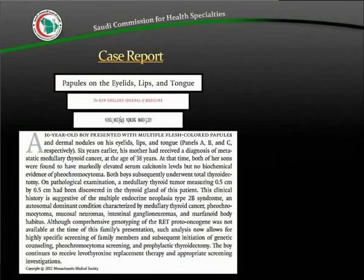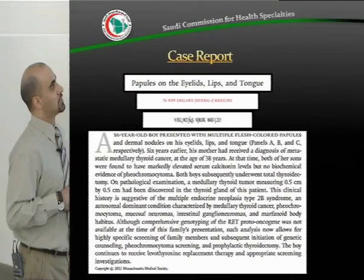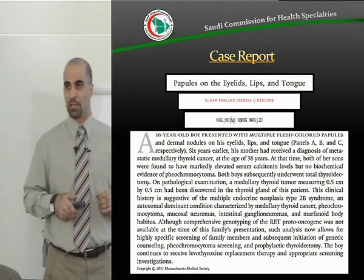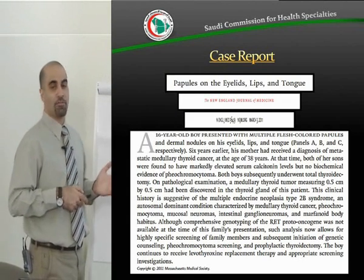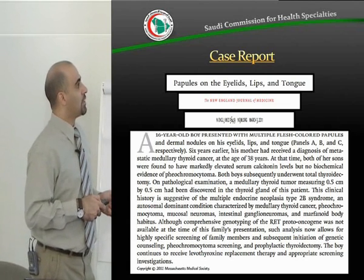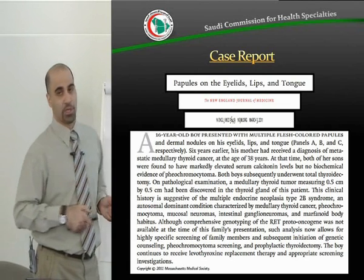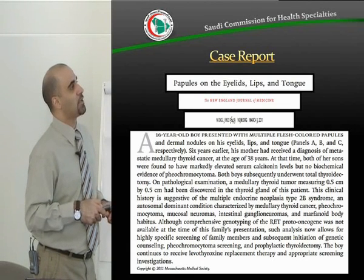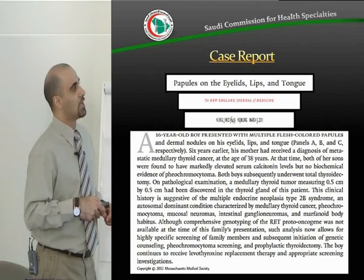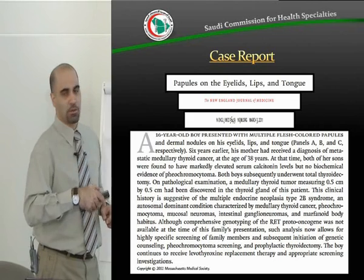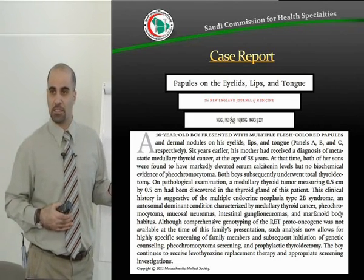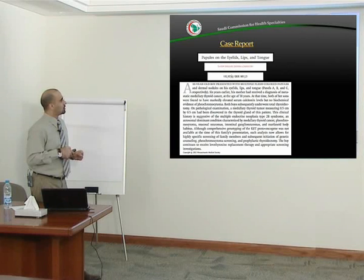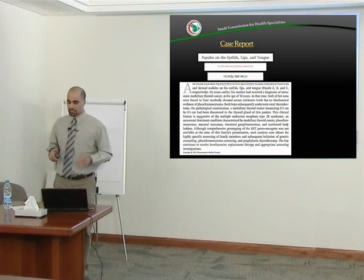This is an example of a case report titled 'Papules on the Eyelids, Lips, and Tongue,' published in the New England Journal of Medicine on March 3, 2011. It describes a 16-year-old boy who presented with multiple flesh-colored papules and dermal nodules on his eyelids, lips, and tongue. As we said, a case report is only on one patient — it is simply a description of the characteristics found in that one patient.